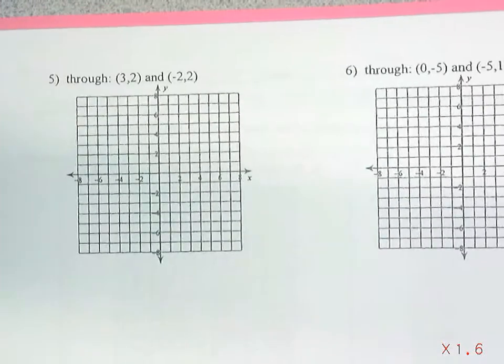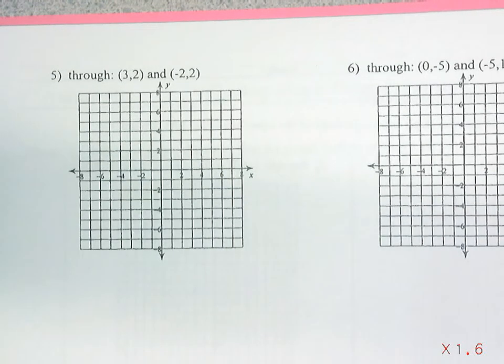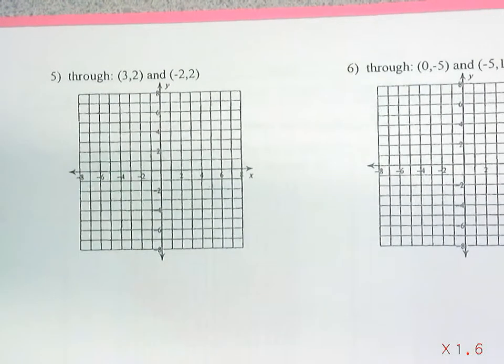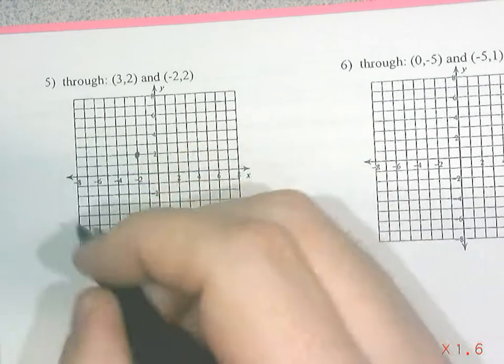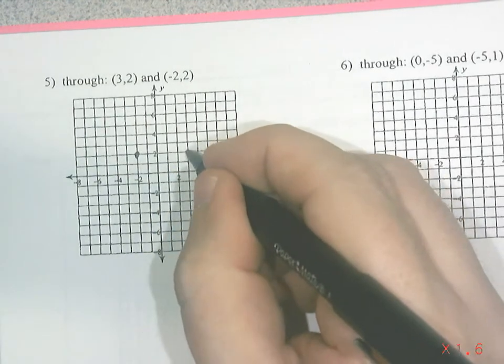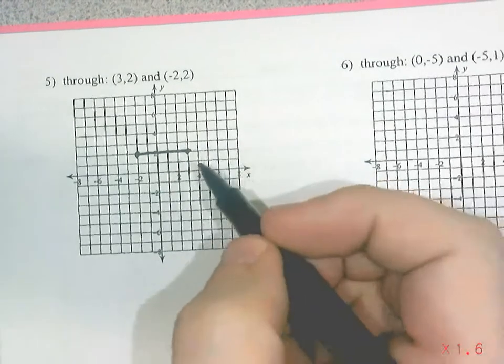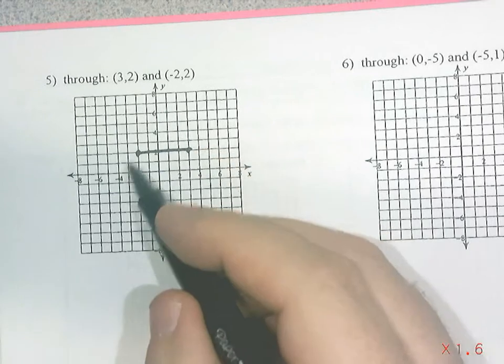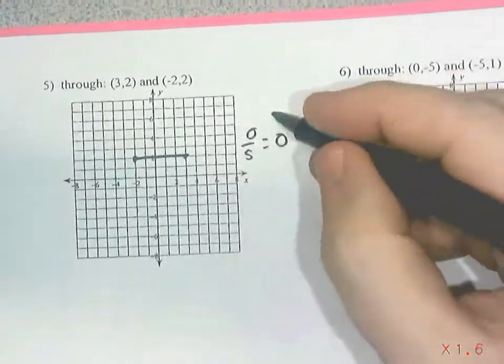Now let me show you another way — say you can't remember that formula. Here's the easy way: if you're given two points, you can always make a graph. Plot the points — negative 2 and 2 goes here, positive 3 and 2 goes here. That's a horizontal line. A horizontal line has zero slope: the rise is zero, the run is five, and zero over five is zero. Slope is zero.